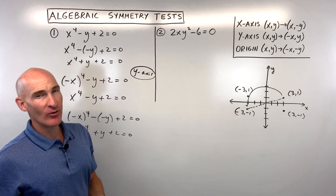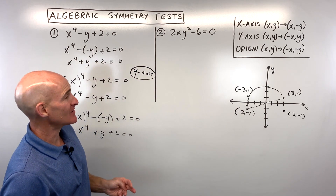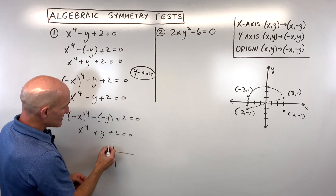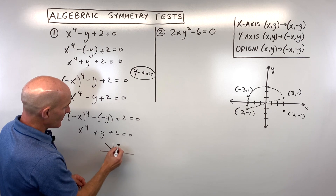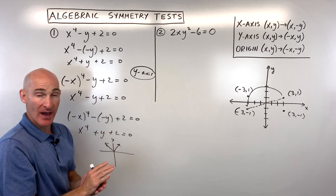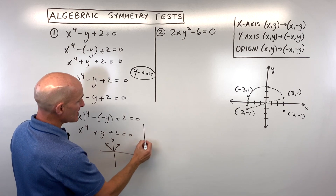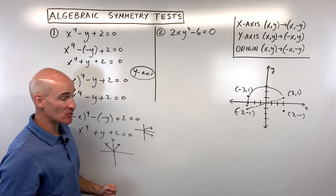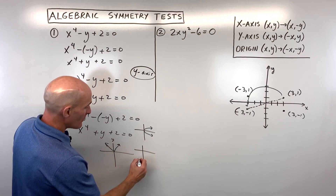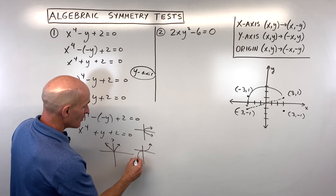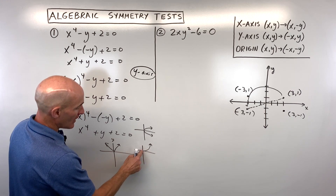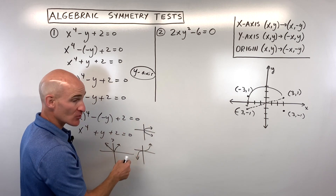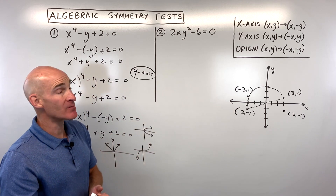You might be asking what x-axis symmetry, y-axis symmetry, and origin symmetry actually look like. Y-axis symmetry looks like this — if you fold it over the y-axis, it matches to itself. X-axis symmetry means if you fold it over the x-axis, it matches to itself. Origin symmetry means if you hold your finger at the origin and turn the paper 180 degrees, it matches to itself. That's what we're talking about when we talk about symmetry.